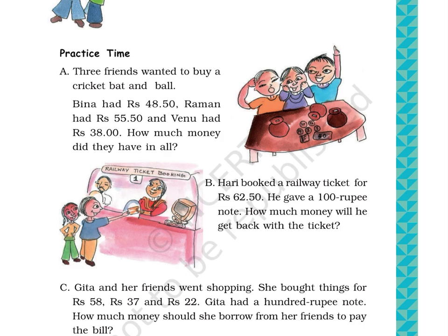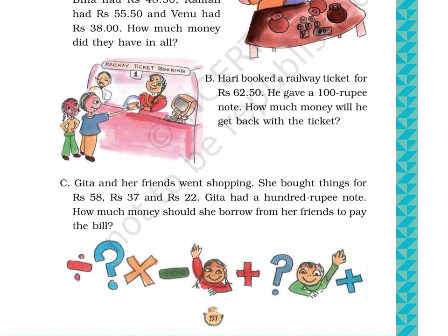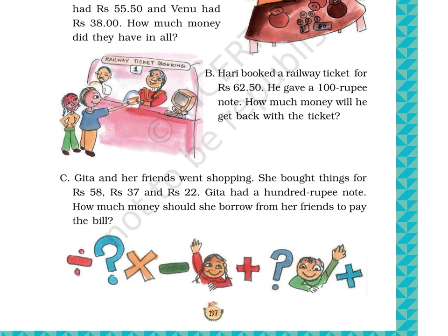Question B: Hari booked a railway ticket for Rs. 62.50. He gave a 100 rupee note. How much money will he get back with the ticket? The picture at the left side shows a railway ticket booking window with a man and woman behind the counter and a computer. A boy is giving a 100 rupee note through the window to the woman on the other side.